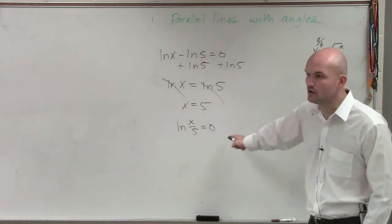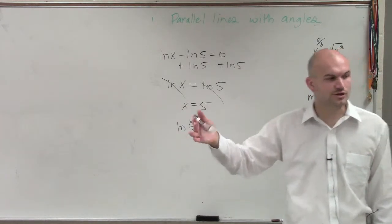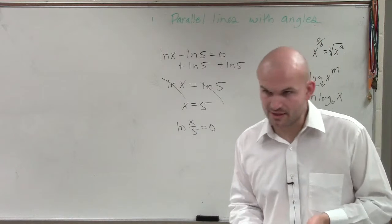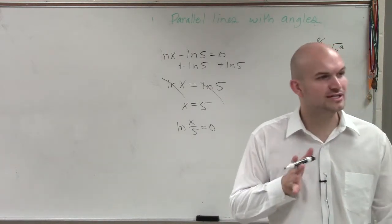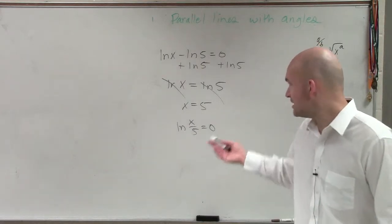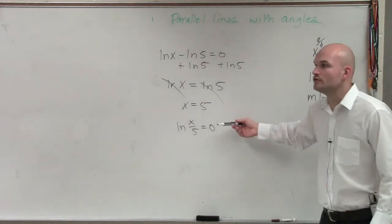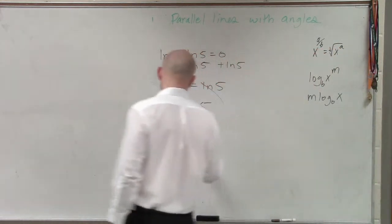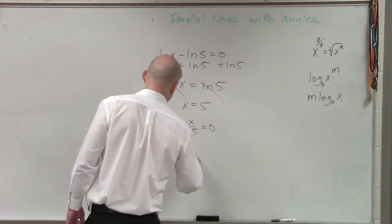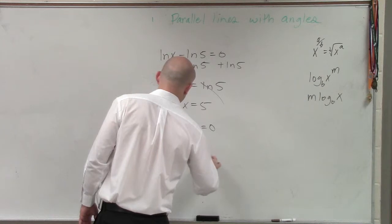If you wanted to solve this, another way that we can do is if you can't solve it in logarithmic form or maybe exponential form, try converting it to the other form. So right now, this is in logarithmic form. You could also rewrite this in exponential form. So to rewrite this in exponential form, I have e to the 0 equals x over 5.